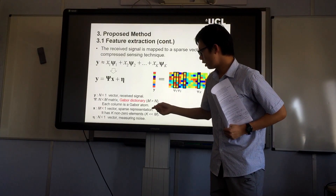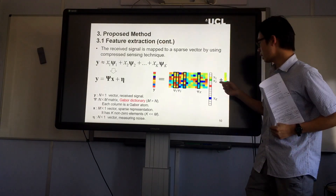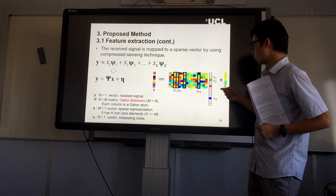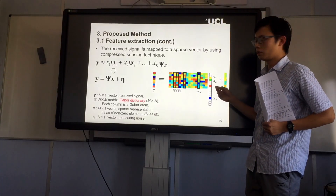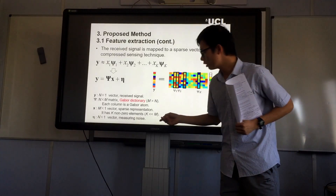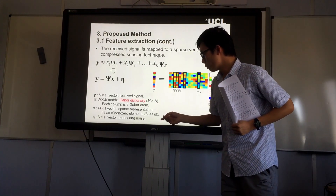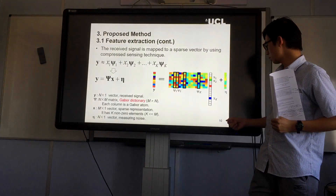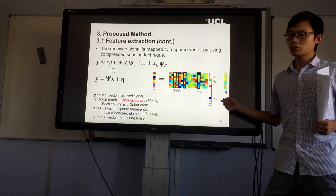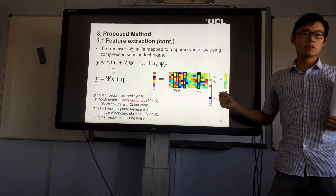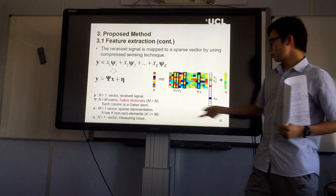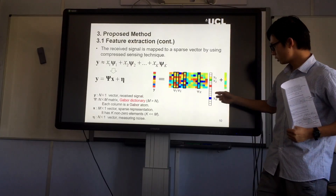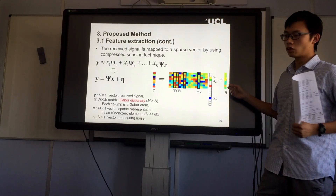Here is the mathematical model of compressed sensing. We use a matrix to express the relationship. X is the sparse representation — it only has a limited number of non-zero elements in this figure. And eta is the measurement noise. The model involves the received signal, the dictionary, the sparse vector, and the noise.